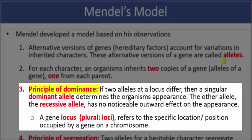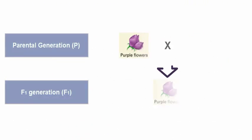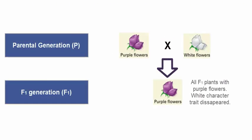So, the principle of dominance is just basically explaining what we observed in the F1 generation. Remember, in the F1 generation, all the white flowers disappeared right here. The first filial generation had absolutely no white flowers.